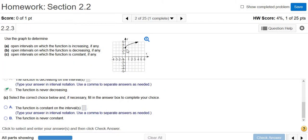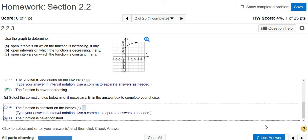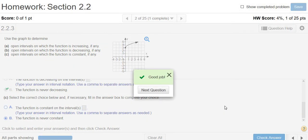And constant is when the graph is not changing. It's constant, so it's like a horizontal line. In this case, it's never constant either. That's it. I hope that helped.